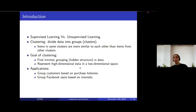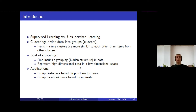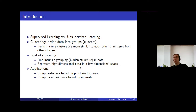In unsupervised learning those ground truth labels are not available — they are missing. One thing we can do is clustering, where we divide the data into groups or clusters such that items in each cluster are more similar to each other than to items from other clusters. The goals of clustering include finding intrinsic hidden structure in the data, representing high-dimensional data in lower-dimensional space, and it has many applications — for example, grouping customers by purchase histories to find patterns and trends.